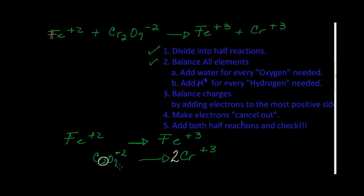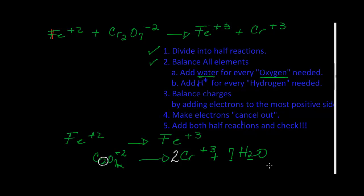I have seven oxygens in the dichromate ion. Rule number two tells me that for every oxygen that I need, I am allowed to add H₂O. Since I have seven oxygens on the reactant side, I am going to add seven waters on the product side. That introduces my seven oxygens in the product side. Now my hydrogens are not balanced — I have seven times two, which is 14 hydrogens.